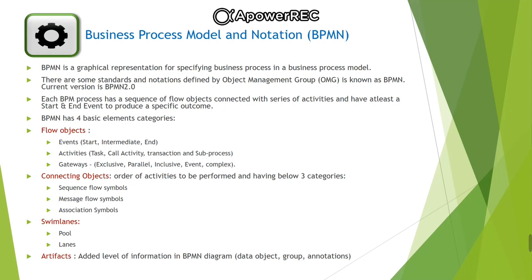Flow objects are the main describing elements within BPMN and consist of three core elements: events, activities and gateways. Events are further categorized as start, intermediate and end events, which are represented with a circle. Activities are further categorized as task, transaction, call and sub-processes, represented with a round corner rectangle. Gateways are further categorized as exclusive, parallel, inclusive, event and complex gateways. They are represented with a diamond shape and determine the forking and merging of paths depending on the conditions expressed.